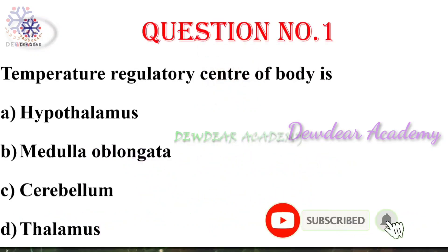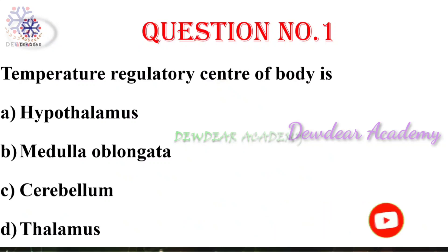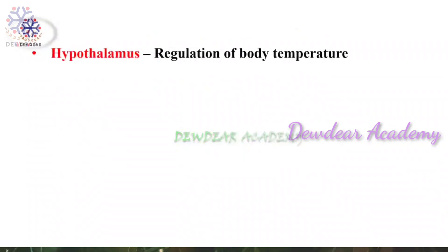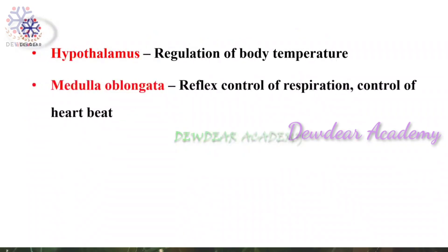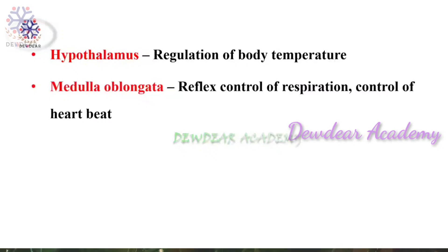First question: Temperature regulatory center of body is — options: hypothalamus, medulla oblongata, cerebellum, thalamus. The right answer is hypothalamus. Hypothalamus is concerned with the regulation of body temperature. Medulla oblongata is concerned with the reflex control of respiration, heartbeat, and all.